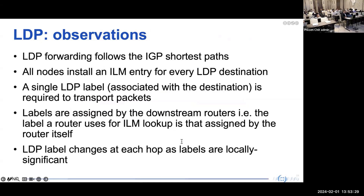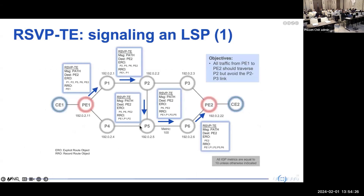Some observations on LDP: LDP forwarding follows the IGP shortest path and has no traffic engineering capability. All nodes install an ILM entry for every LDP destination, and a single LDP label is associated with each destination. LDP labels are assigned by the downstream router — the label used for MPLS forwarding lookup is assigned by the router itself. LDP labels typically change at each hop since they are locally significant. This is different from segment routing, where the label does not change.